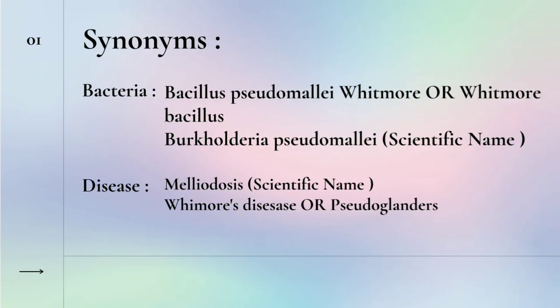Our first topic is synonyms. For bacteria, the scientific name is Burkhaldaria Sudumaliyae and common names are Bacillus sudumaliyae or whitmore bacillus. And for disease, the scientific name is Maliyae disease and common names are Whitmore's disease, which is named after Captain Alfred Whitmore who first discovered the disease, and pseudoglandis — because Maliyae disease is similar to Glandis disease to a great extent.